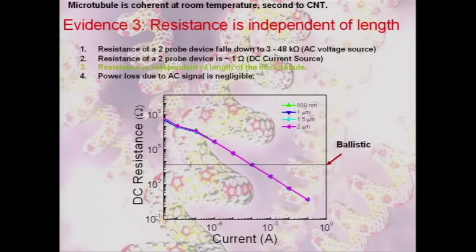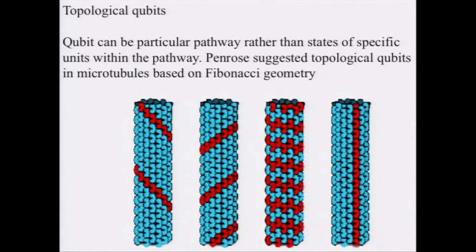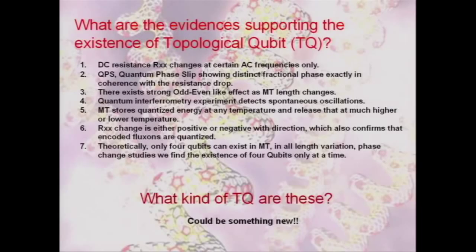While each hydrophobic pocket might constitute a quantum bit depending on how its electron cloud is shifted, the larger pathways for energy throughout the microtubule lattice may themselves be quantum bits. This is called a topological qubit.